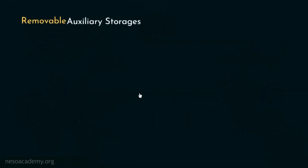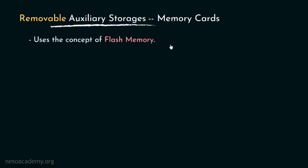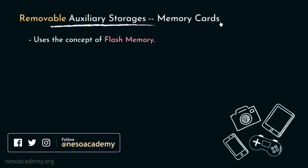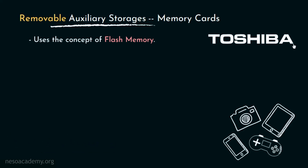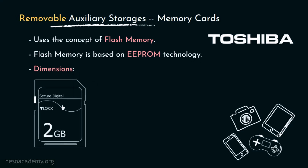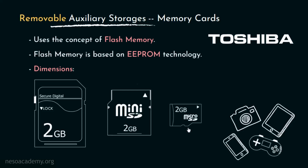Next in line is the memory cards. These are data storage devices that use the concept of flash memory, commonly used in portable electronic devices such as digital cameras, smartphones, tablets, and video game consoles. Flash memory was invented by Toshiba Incorporation in the 1980s, and it is based on EEPROM — Electronically Erasable Programmable ROM — technology. Based on dimension, we can categorize memory cards in three types: the SD card (Secure Digital), Mini SD cards, and the very popular Micro SD cards.